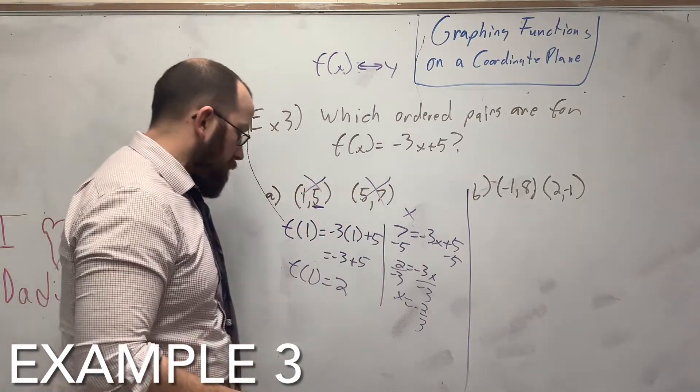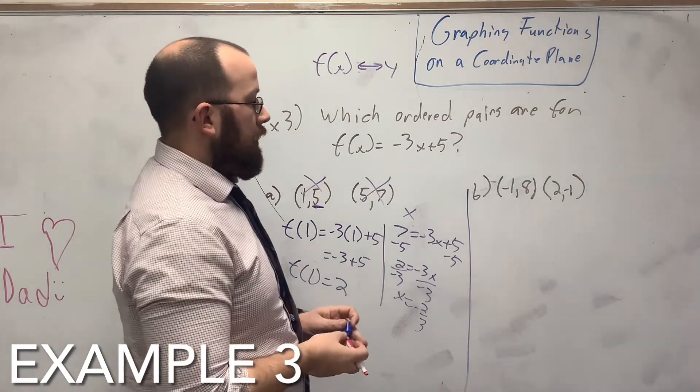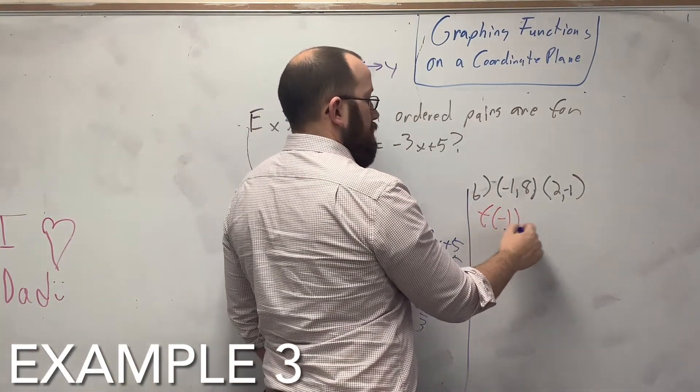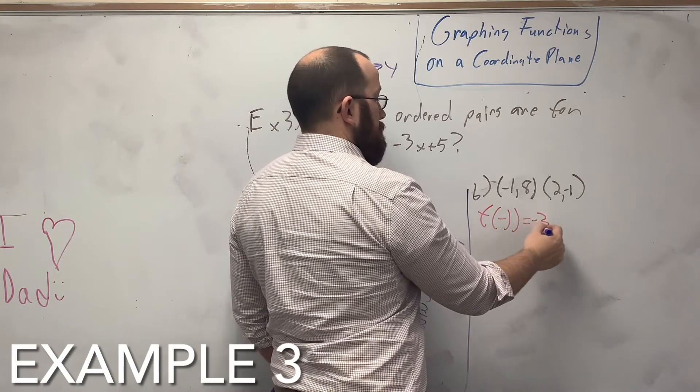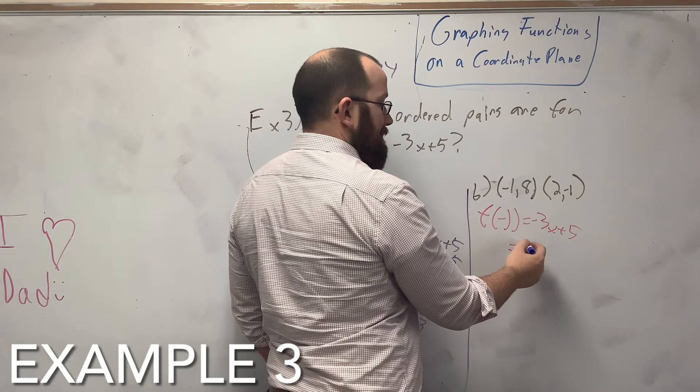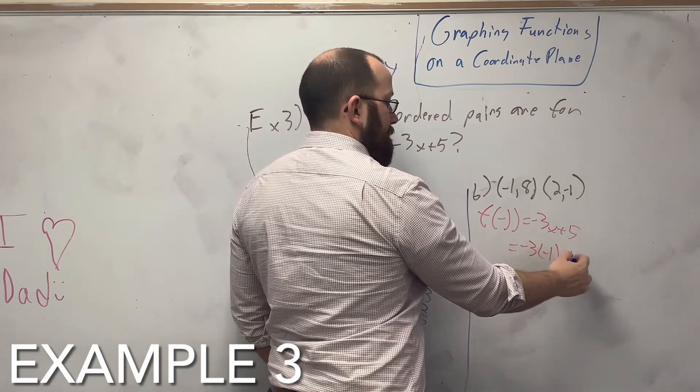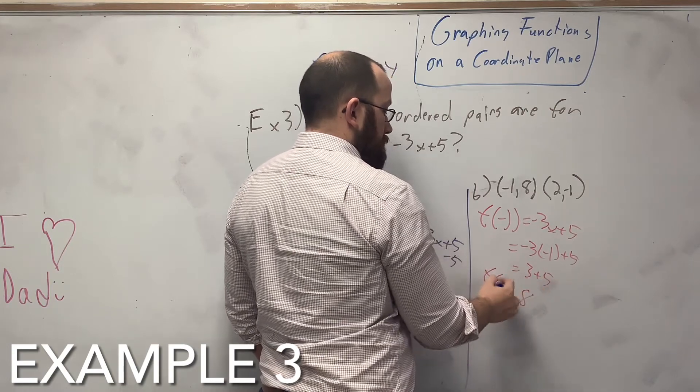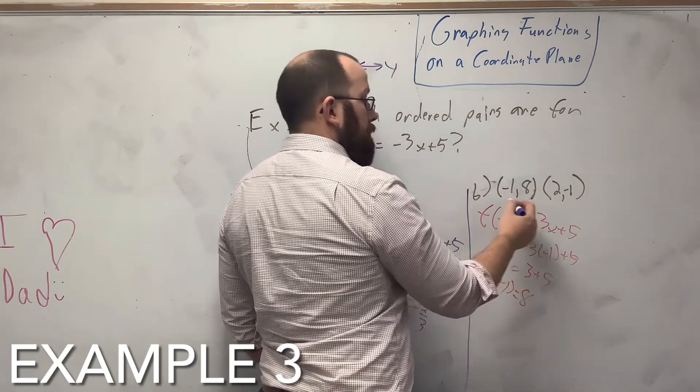So you can plug in either one. The x is just easier to usually plug in. So come over here. f of negative 1 equals negative 3x plus 5. Plug in that negative 1 for everywhere I see an x. So 3 plus 5, 8. And that was what we were looking for.